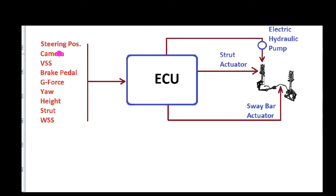These are some of the sensors that are used in a typical active suspension system. We have the steering wheel position sensor, camera in some advanced systems, vehicle speed sensor, brake pedal position sensor, g-force sensor, yaw sensors, height sensors, struts may have sensors to measure up and down movement of the strut, and wheel speed sensors.